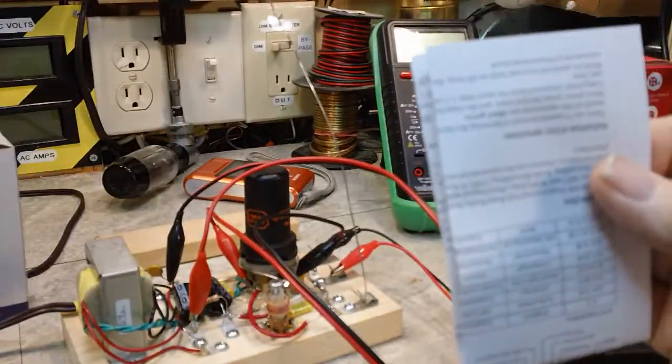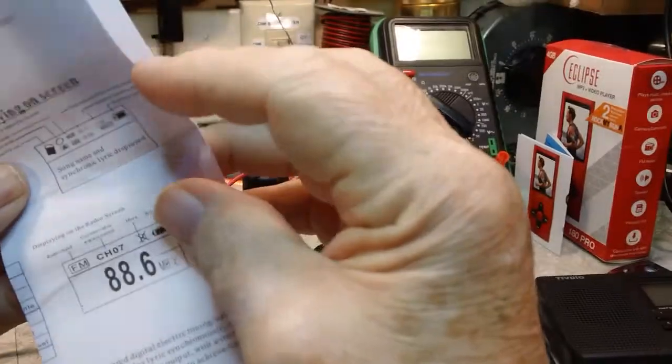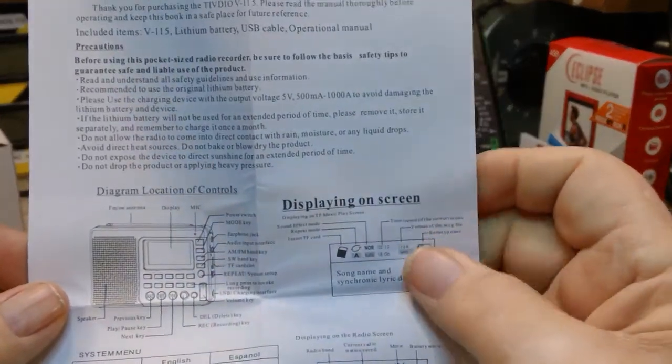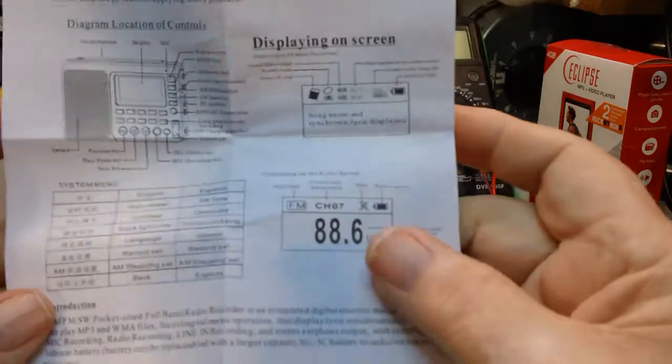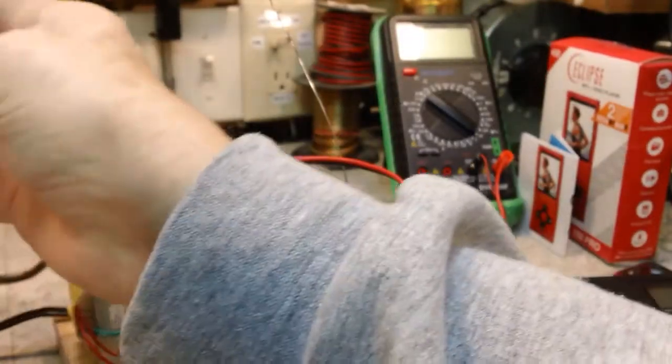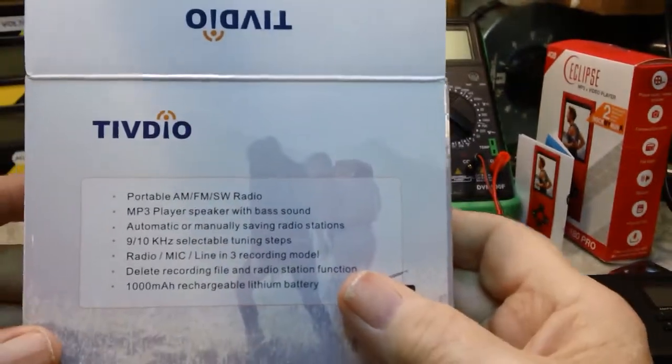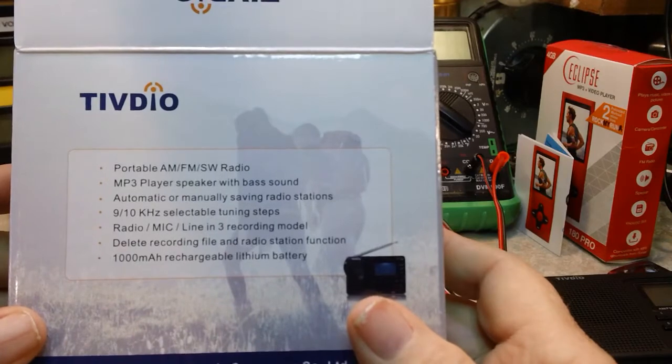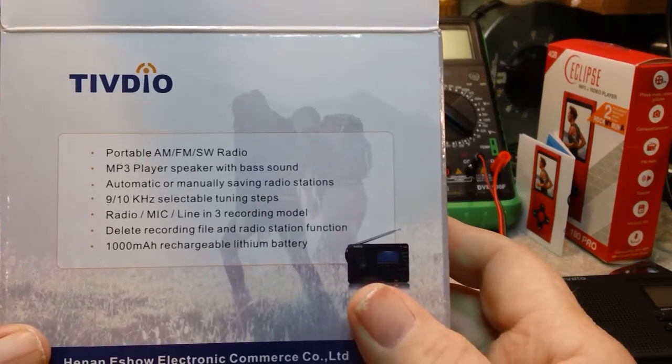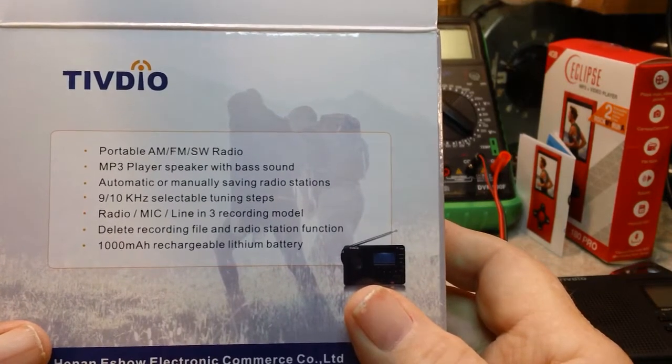Here's the instructions for it. Again, not bad for Chinese to English translations and things. It's not bad at all. You know, I've got to go over and find out exactly how to use it. Most of it you can figure out on your own. This thing does a lot. It's a portable AM FM shortwave radio, MP3 player, speaker with bass sound, and it does have good sound to it.